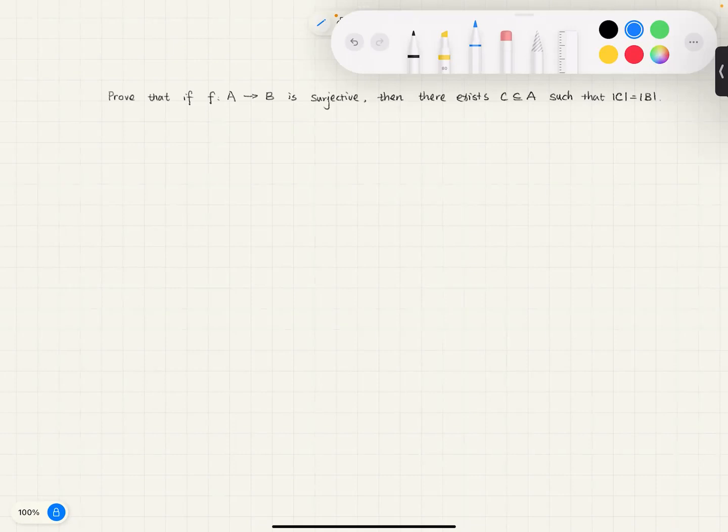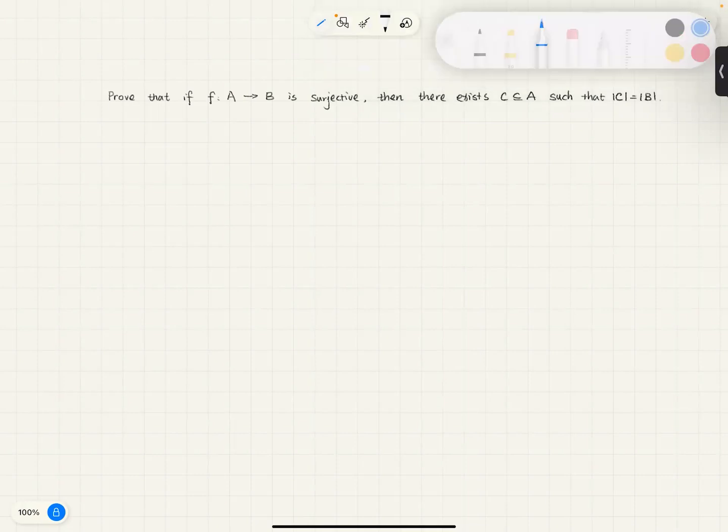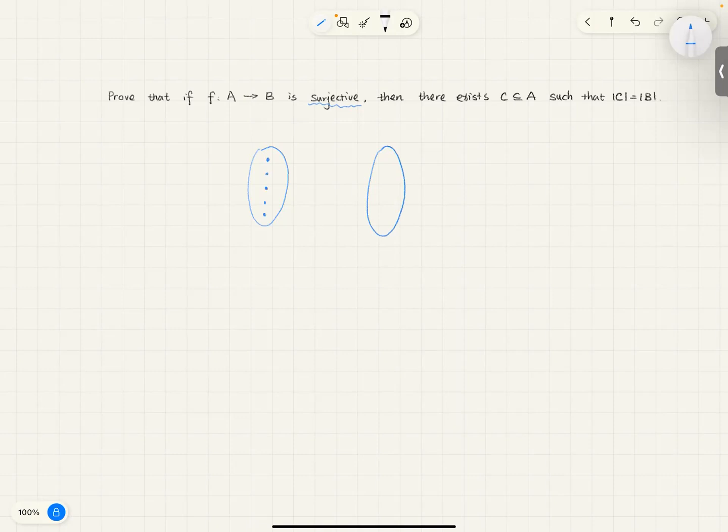So the question says, prove that if f mapping from A to B is surjective, well surjective here is a keyword, it means that if I have my domain and codomain, so let's draw something as a demonstration. This is my domain, this is my codomain, and the mapping is surjective, so let's have a surjective map in some way.